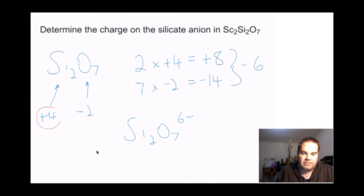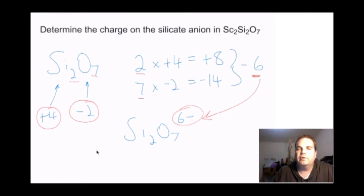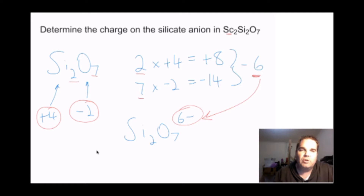Just always use plus 4 for your silicon and minus 2 for your oxygens, multiply by the number you have, and determine your total charge — that's what goes down as your silicate anion charge. Now we're going to combine that with metals to determine the ratio of metal atoms. The previous example was combined with scandium.